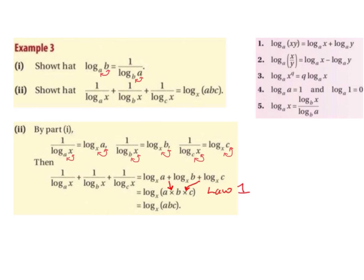We know from Law 1 of logs that log base a of (x times y) gives us log base a of x plus log base a of y. We are going to use this law in reverse, going from log base a of x plus log base a of y to log base a of (x times y). In this case, the plus becomes multiply and we get log base x of (a times b times c). Since multiplying variables means we just place them together, a times b times c gives us abc. So this simplifies to log base x of abc.